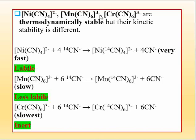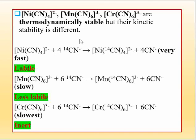Now I will give three more examples: nickel, manganese, and chromium complexes. These are all thermodynamically stable complexes. But kinetically, they differ. The nickel cyano complex reacts with cyanide very fast, which means it is a kinetically labile complex.